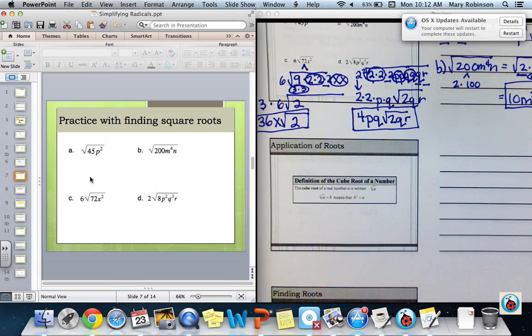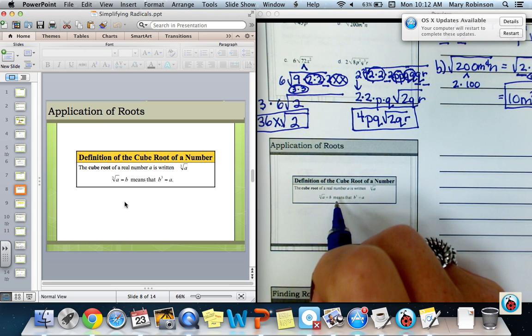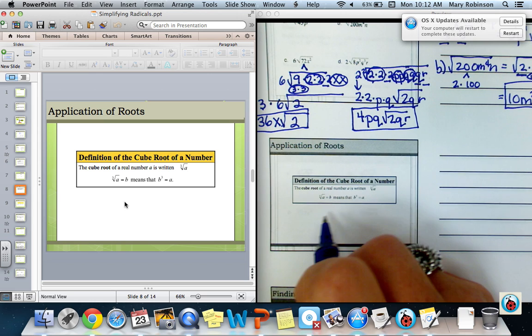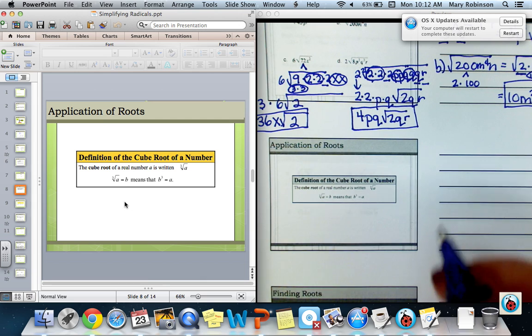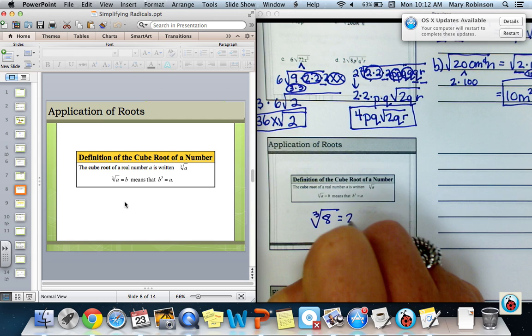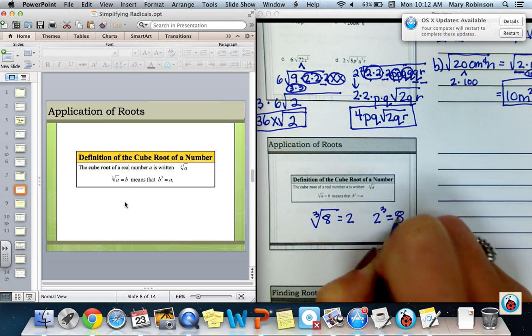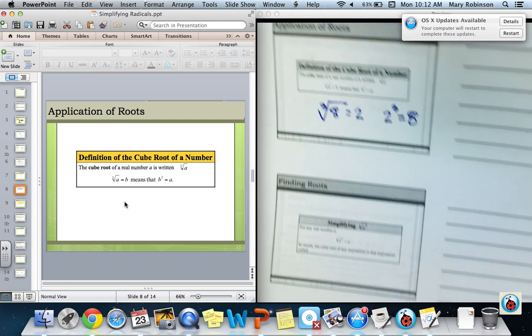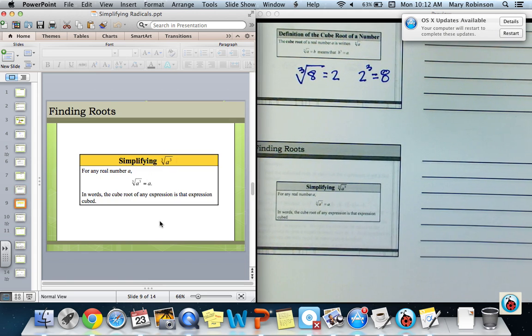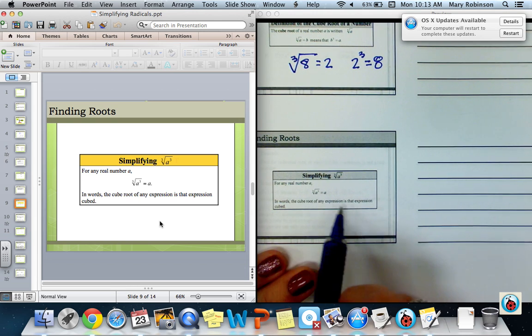Next, we're going to learn that this also applies to cube roots. The definition of a cube root says that if a real number A is written as the cube root of A, and we set that equal to B, then B cubed is equal to A. So think about it as the 8 that we've already done. The cube root of 8, we said, was equal to 2. That means that 2 cubed equals 8.